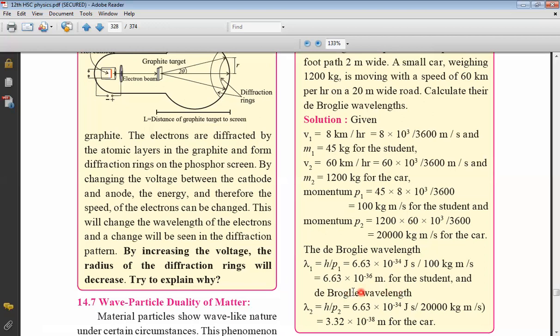And similarly, lastly, the de Broglie wavelength for car would be lambda 2 equal to H upon P2. 6.63 into 10 raised to minus 34 joules second, H, and momentum of the car, 20,000 kg meter per second, which comes out to be 3.32 into 10 raised to minus 38 meters for the car.